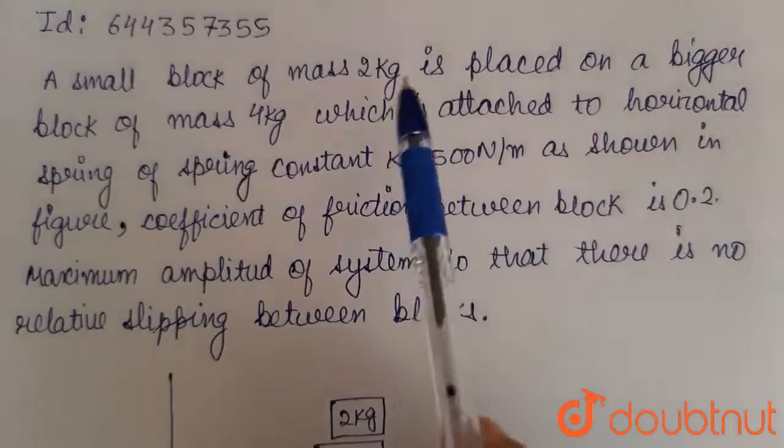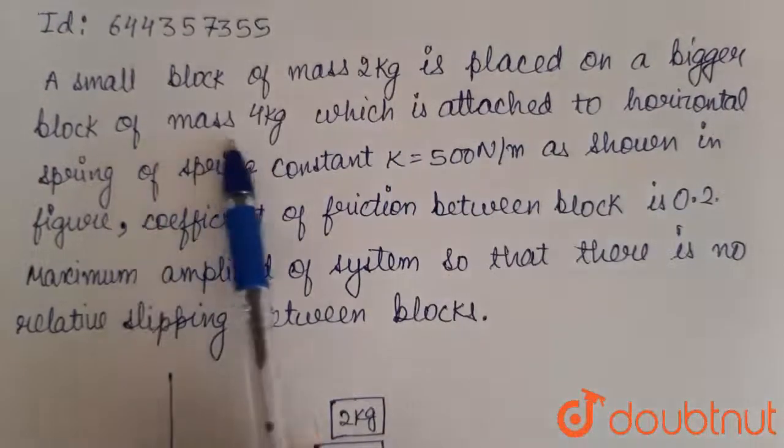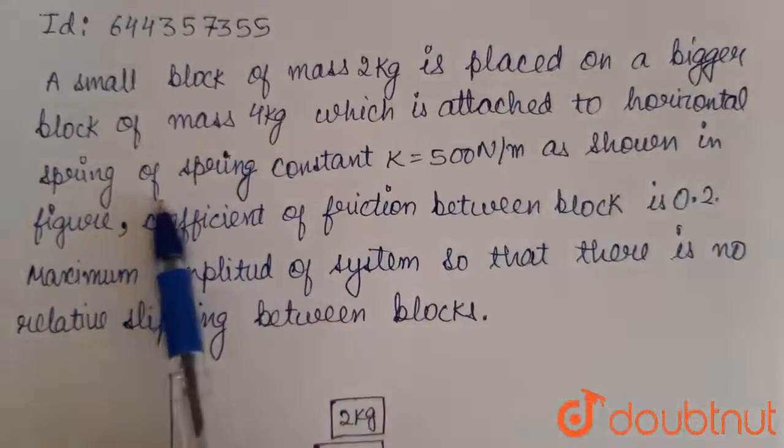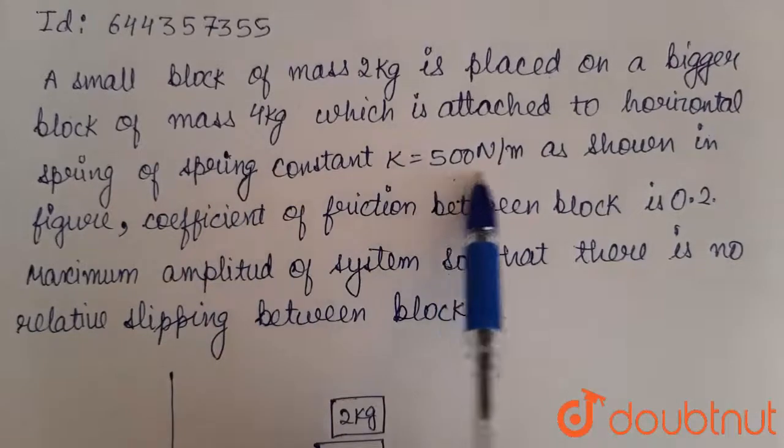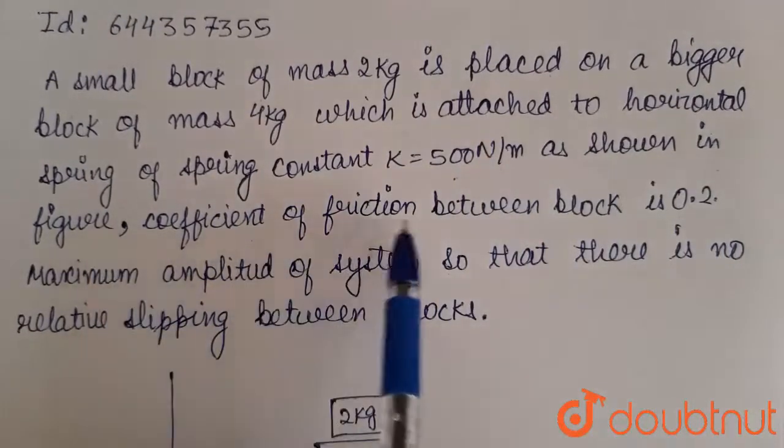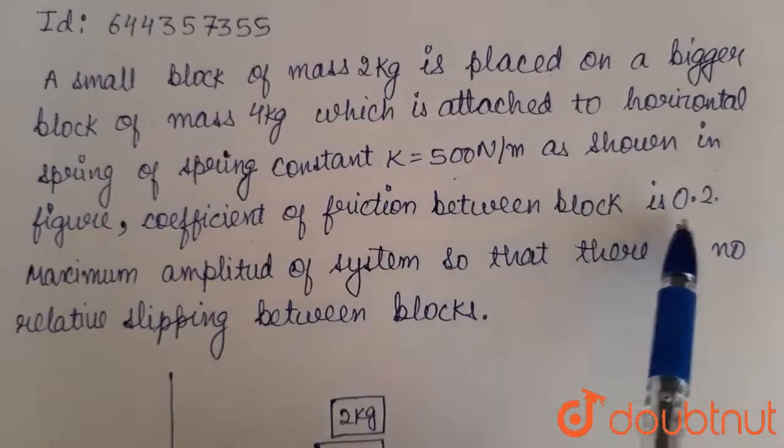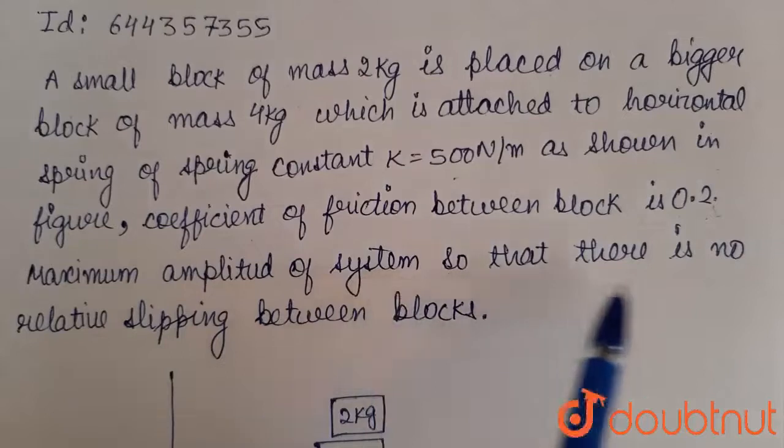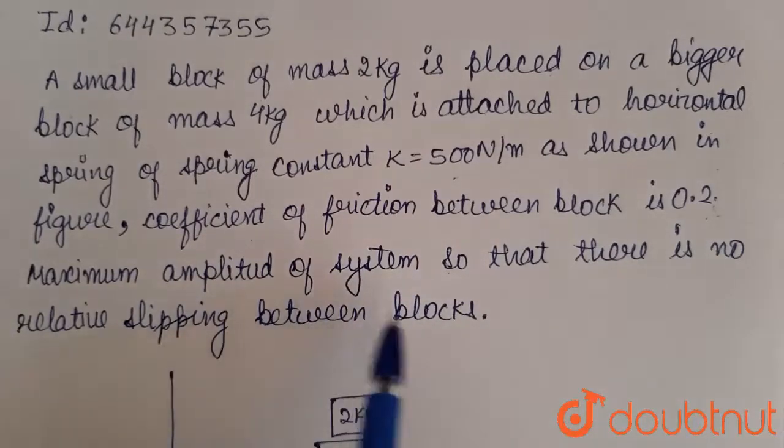A small block of mass 2 kg is placed on a bigger block of mass 4 kg, which is attached to horizontal spring of spring constant 500 N per meter, as shown in figure. Coefficient of friction between the blocks is 0.2. Maximum amplitude of system so that there is no relative slipping between blocks.